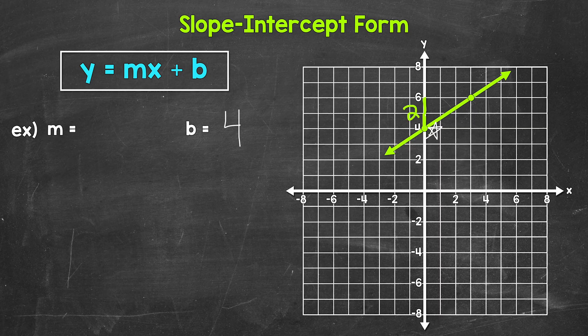And then we need to go to the right, one unit, two units, three units to get to our other point. So our run is 3, a positive 3, since we went to the right. So rise of 2 over our run of 3.